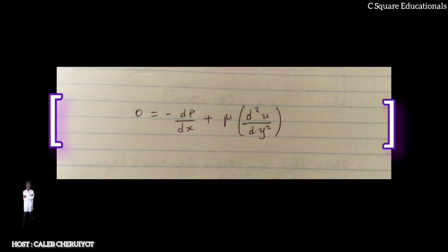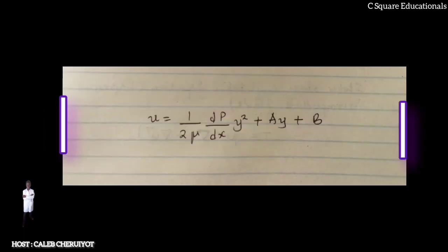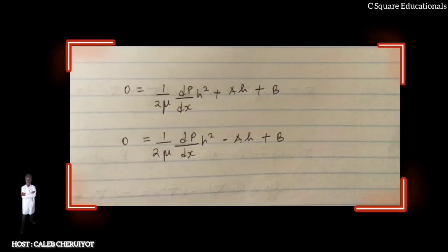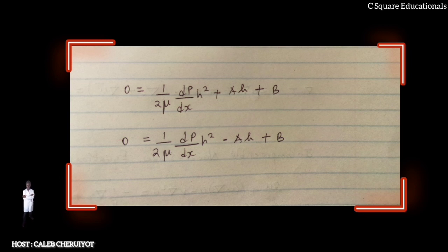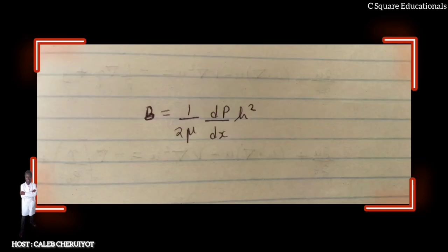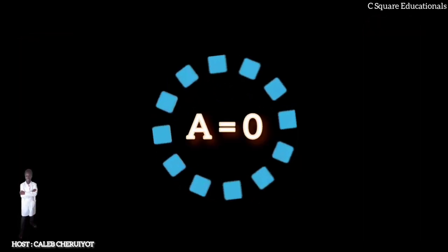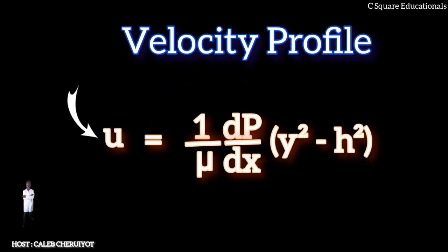Integrating twice to find the velocity profile with boundary conditions y = h, u = 0 and y = −h, u = 0, we get u = (1/2μ)(dp/dx)(y² + ay + b). Substituting the two boundary conditions gives two equations. Adding and solving yields b = −(1/2μ)(dp/dx)h², and then a = 0. Finally, the velocity profile is u = (1/2μ)(dp/dx)(y² − h²).